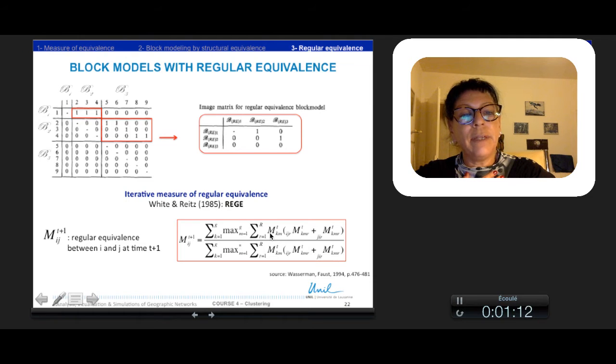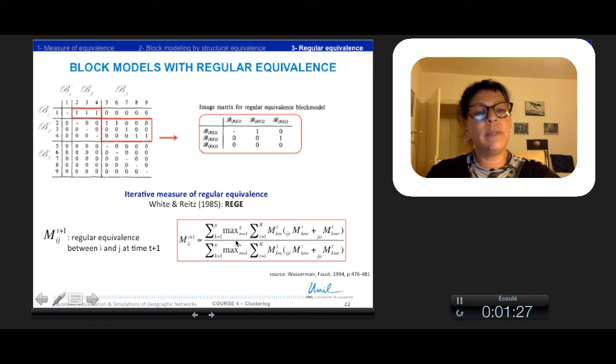The denominator corresponds to the maximum possible value of the numerator when the ties of i and j match perfectly and the adjacent nodes are also regular equivalents. This index ranges from zero to one, and in general, according to Wasserman, three iterations are sufficient.